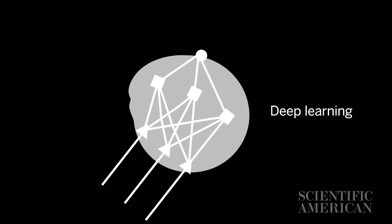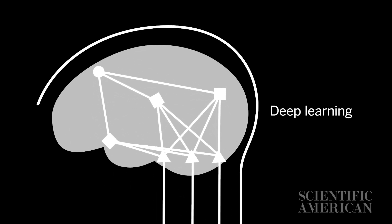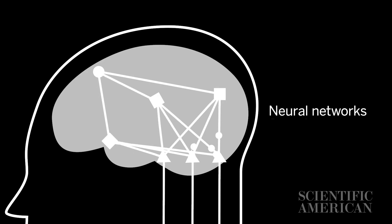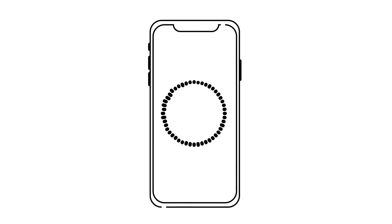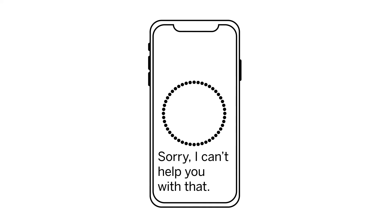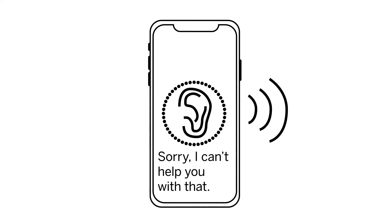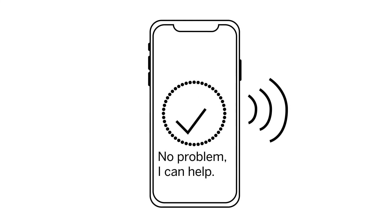These layers mimic the structure of the human brain, where neurons fire signals to other neurons. That's why we also call them neural networks. Neural networks are the foundation for services we use every day, like digital voice assistants and online translation tools. Over time, neural networks improve in their ability to listen and respond to the information we give them, which makes those services more and more accurate.